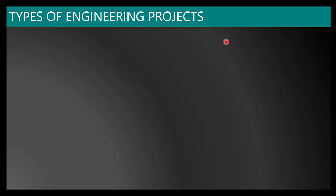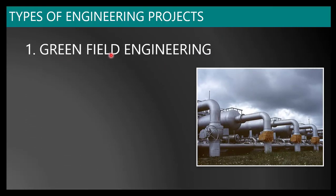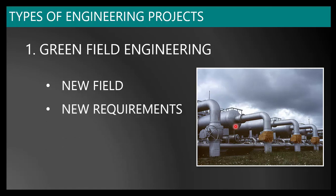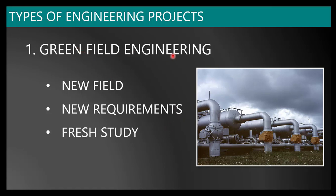The execution of process plant engineering has different types of strategies. The first and foremost strategy is greenfield engineering. Greenfield engineering is a strategy used for a brand new field — everything is going to be new. There will not be any existing equipment or piping, and there will not be any existing plot. The new field must be designed exclusively based on new requirements, because new fields come up with brand new requirements. Wherever a fresh study is required, greenfield engineering applies — it is completely a brand new project.